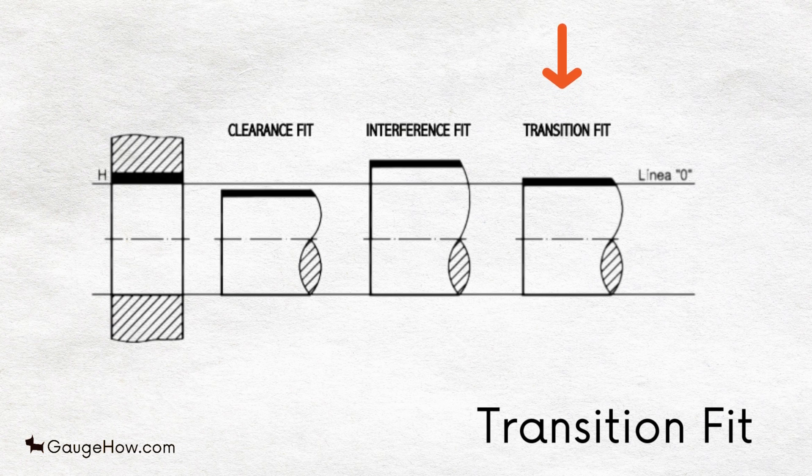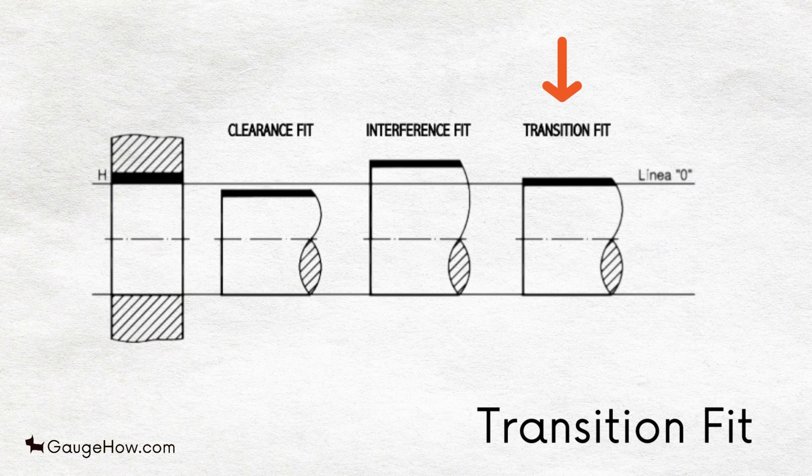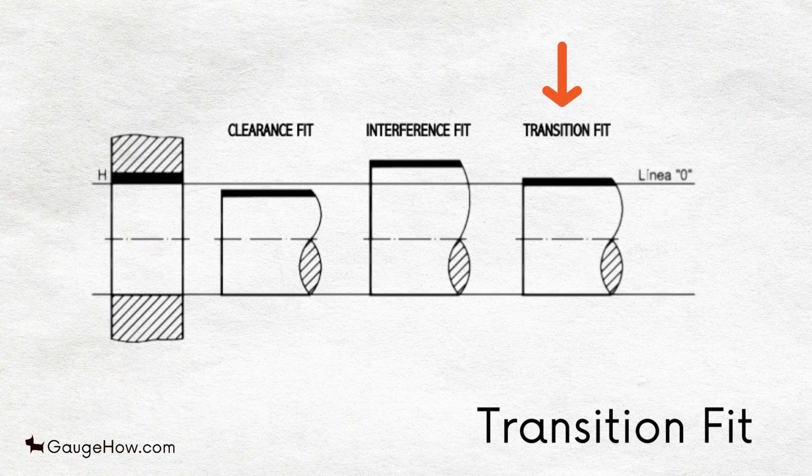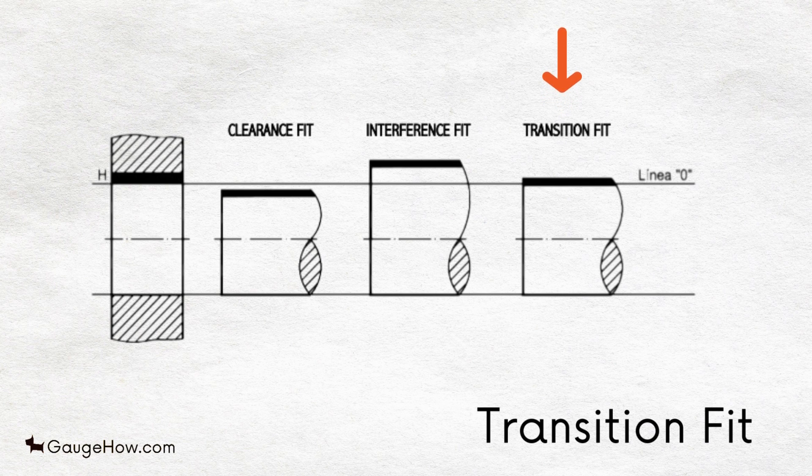Transition Fit. This fit is one having limits of size so precise that the assembly of the mating parts can result in either a clearance fit or an interference fit. This is achieved by keeping the upper limit of the shaft larger than the lower limit of the hole and the lower limit of the shaft smaller than the upper limit of the hole.